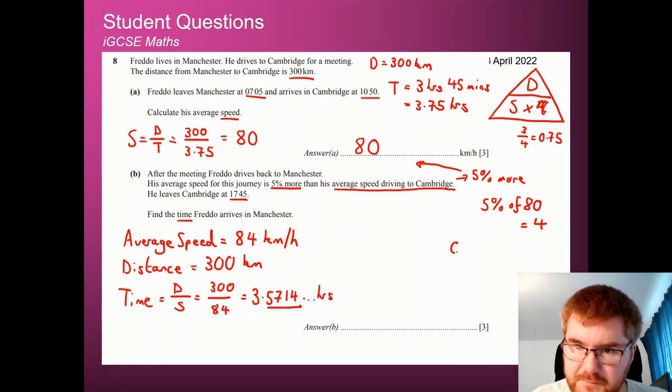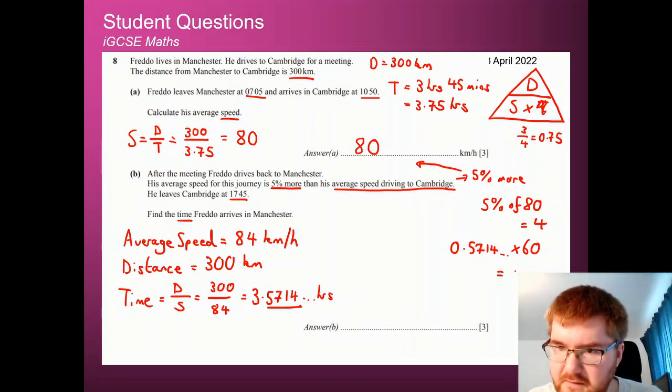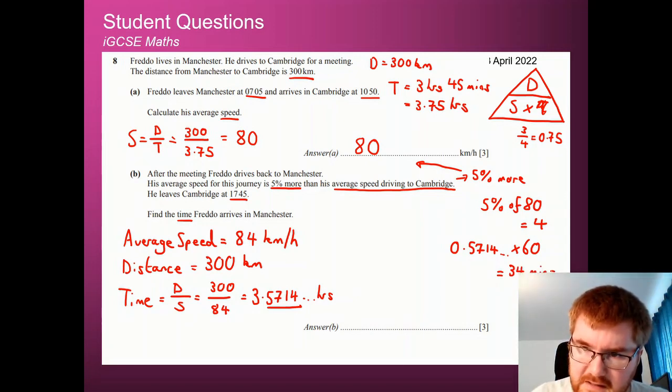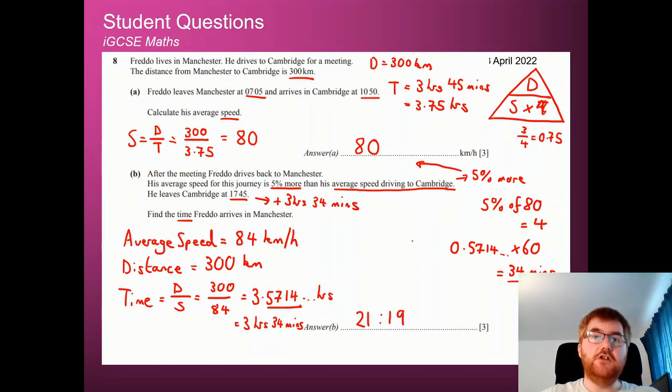The way that we do this is just focus on the decimal. So I'm going to take my decimal, the 0.5714, and I'm going to times that by 60 because there are 60 minutes in an hour. If I do that calculation, I'm not sure I've got the answer here. Yep. I get 34, approximately 34 minutes. So if you do that calculation, we can rewrite this as 3 hours and 34 minutes. Now, this is not our final answer. We just want to find the time Freddo arrives in Manchester. So we need to add 3 hours and 34 minutes to the initial starting time. So that's going to give us 20:45. Then we add on the extra 34 minutes, and that's going to end up at 21:19, using, of course, the 24-hour clock.